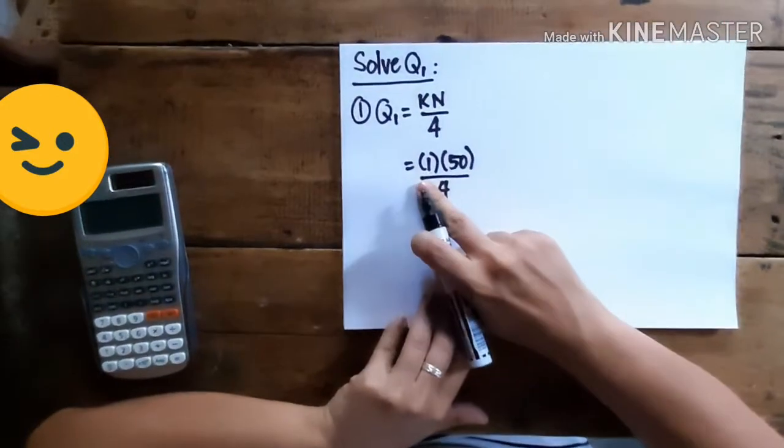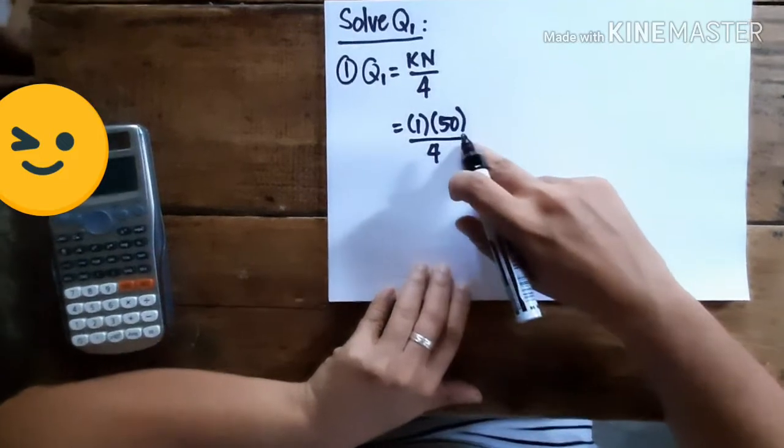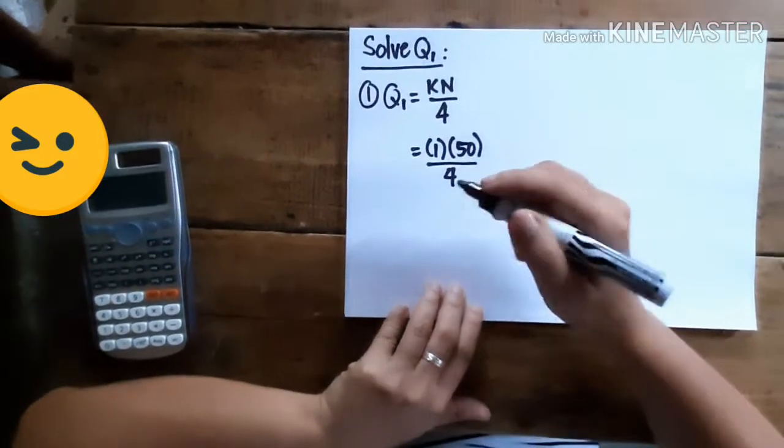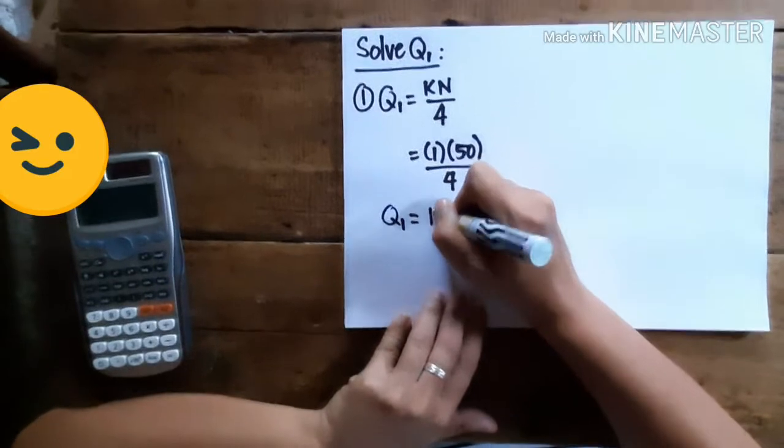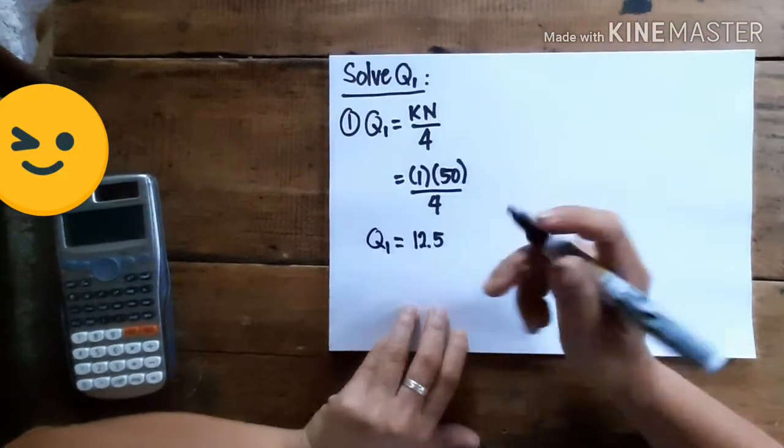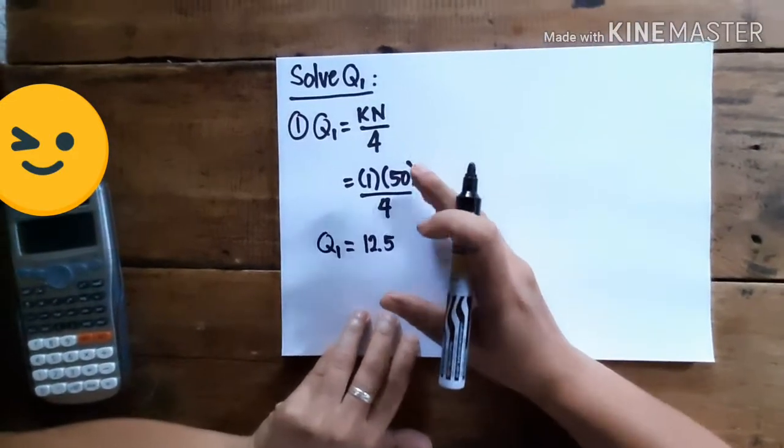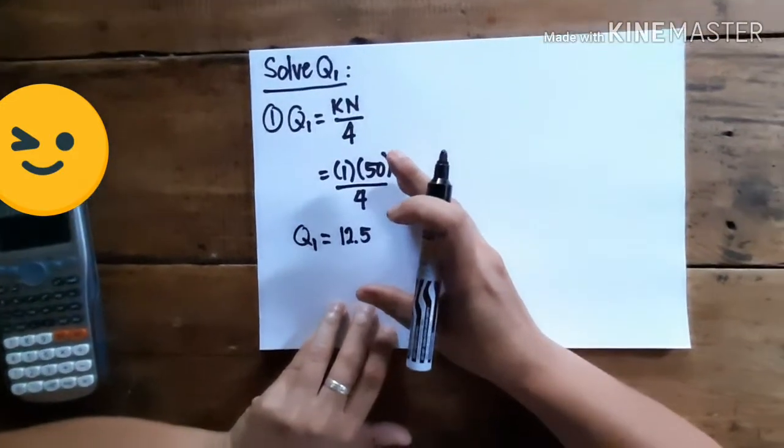And 1 times 50 is 50, and 50 divided by 4, that is 12.5. So the result means that the location or the score of quartile 1 is the 12.5th score.